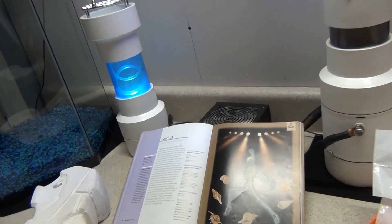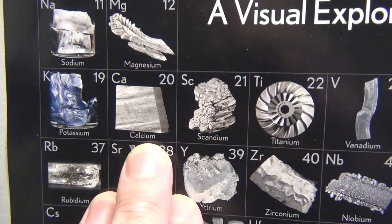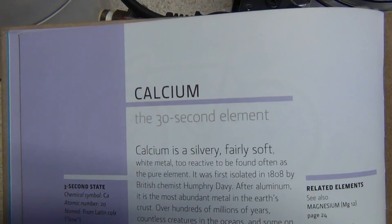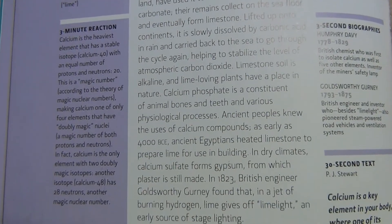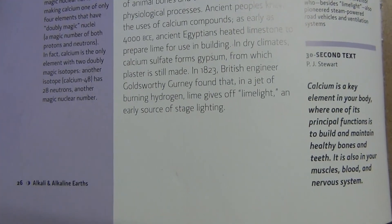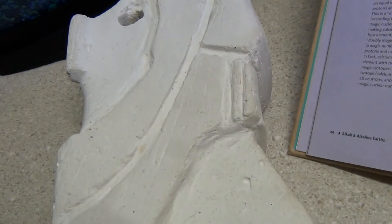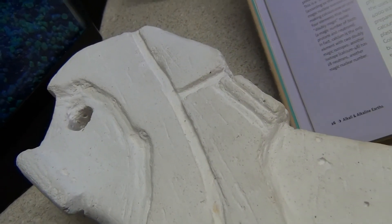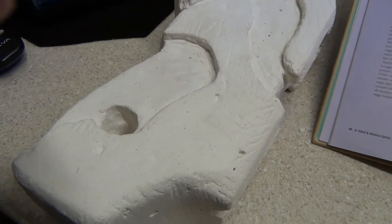I also wanted to talk about calcium real quick. This is another magnificent element right here on the table of elements. Its atomic number is 20. Take a look at it here in the book. The Egyptians heated limestone to make plaster. They were able to use this in dry climates. They made calcium sulfate and it forms gypsum in this piece of plaster. It's very hard.